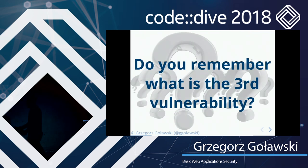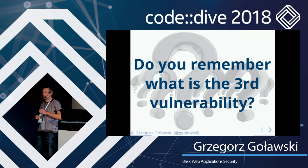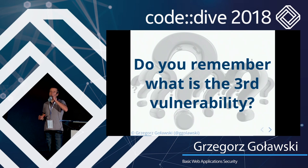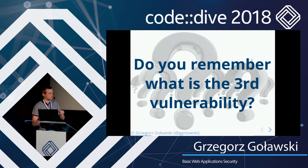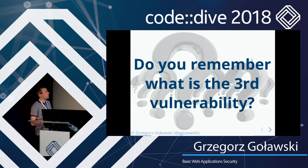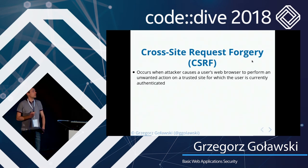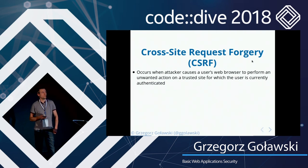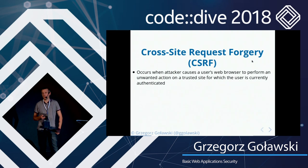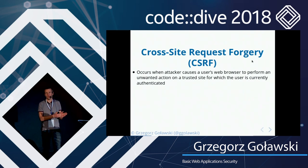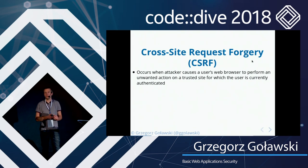The third vulnerability is cross-site request forgery — CSRF. It occurs when an attacker can cause a user's browser to perform an unwanted action on a trusted website for which the user is currently authenticated. In other words, a hacker tricks the user's browser into sending requests to a legitimate website that the user did not intend to make.